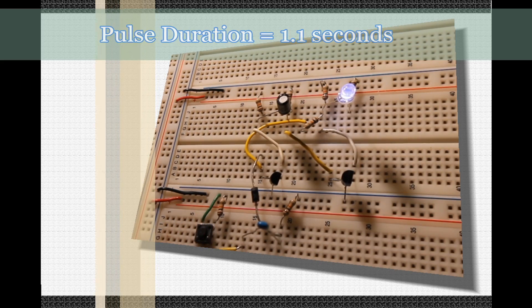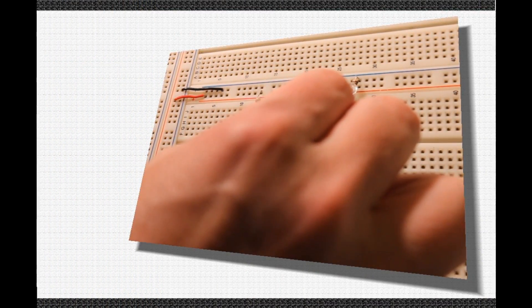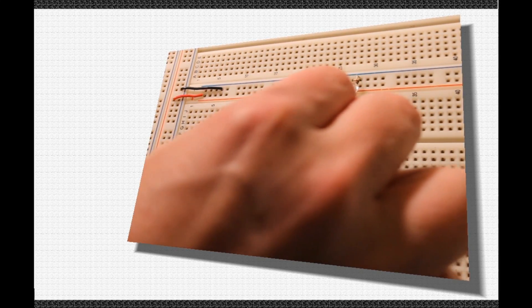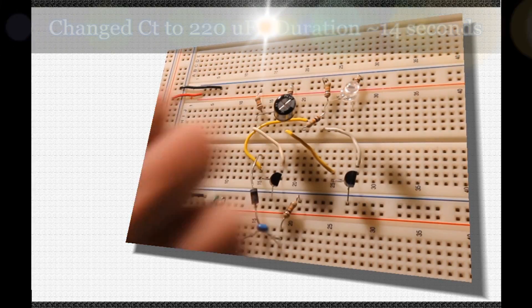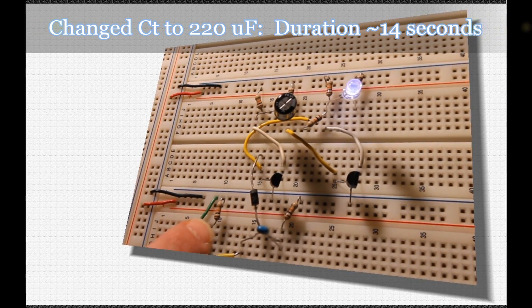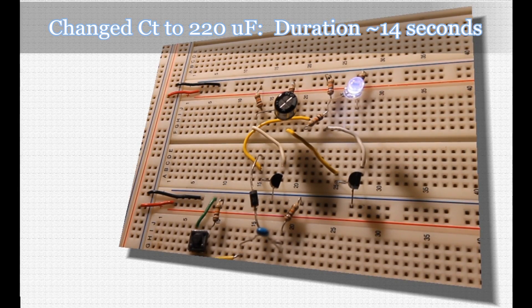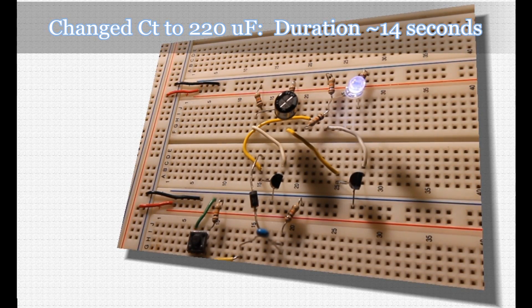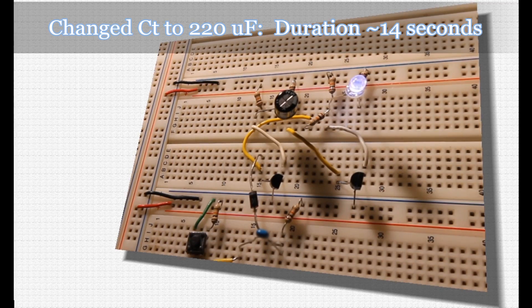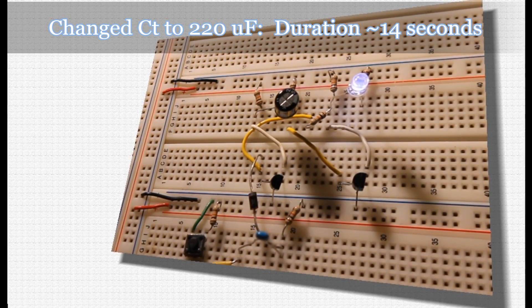Clearly, this circuit has some very practical applications in hobby electronics. You can use it to apply power to another circuit for a specific amount of time, for example, an alarm, or a motorized demonstration, or anything that needs an input to begin and a particular duration to run. Tinker around with this circuit, and try different capacitor and resistor sizes for CT and RT to get different pulse durations.